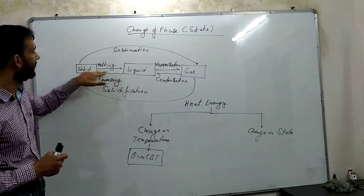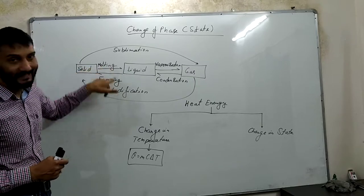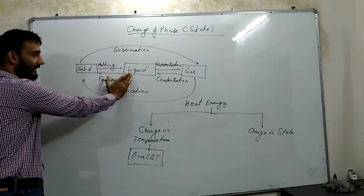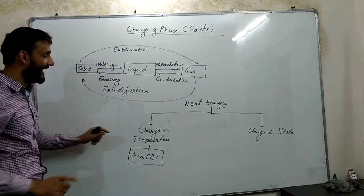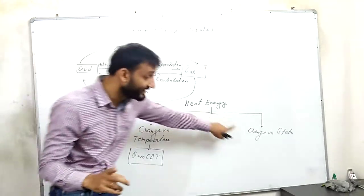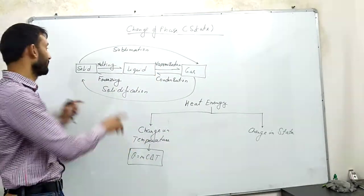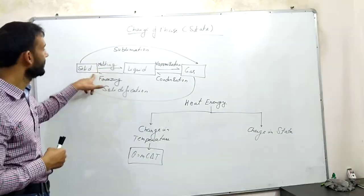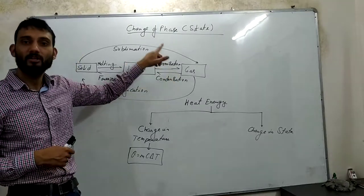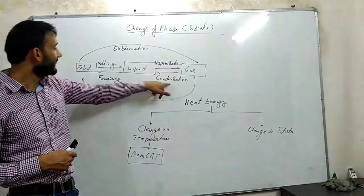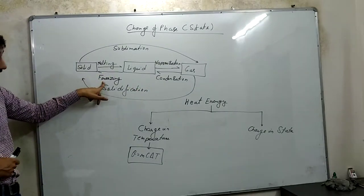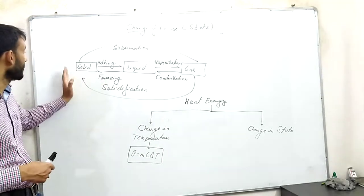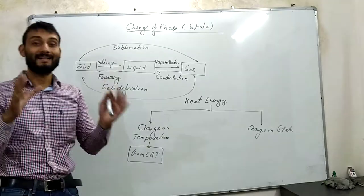When solid gets converted to liquid, it is known as melting. We need heat energy to convert this solid into liquid, and this conversion takes place at constant temperature, because whenever there is a change in state, there will be no change in temperature. Similarly, liquid to gas is vaporization — constant temperature. Gas to liquid — constant temperature. Liquid to solid is freezing — constant temperature. Gas directly to solid is solidification — constant temperature. And solid directly to gas is sublimation — at constant temperature.